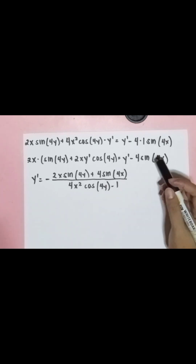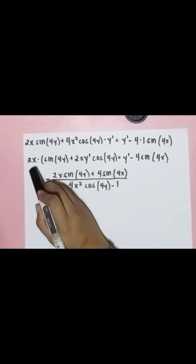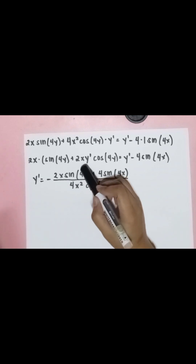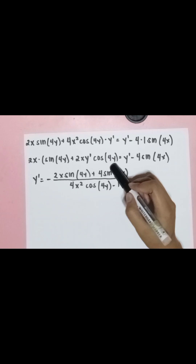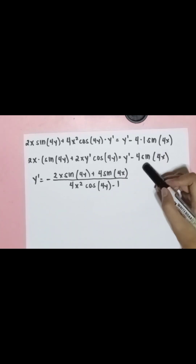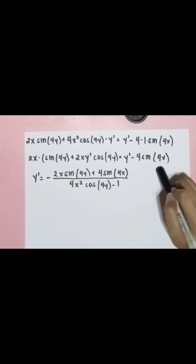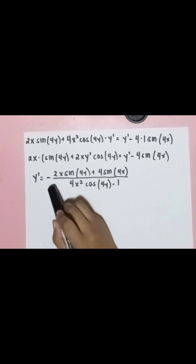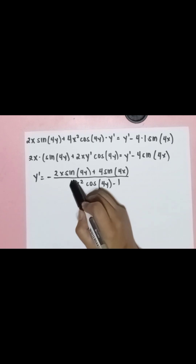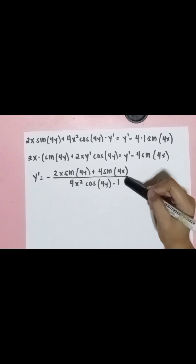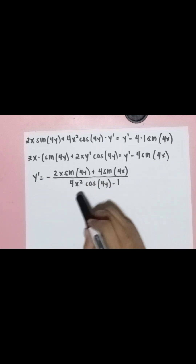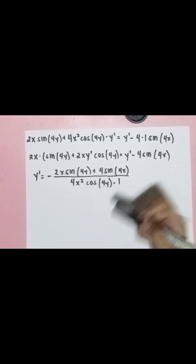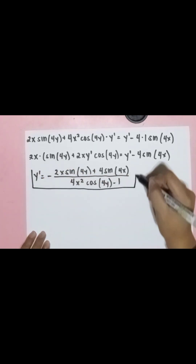Simplifying gives us 2x sine 4y plus 4x squared cosine 4y times y prime equals y prime minus 4 sine 4x. The final answer is: y prime equals negative 2x sine 4y plus 4 sine 4x, all over 4x squared cosine 4y minus 1. This is our final answer.